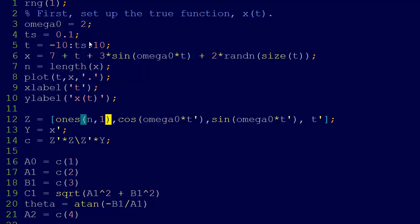So then what we can do is we can fit it. And so this is just what we set up over there. Our basis, right, is ones in the first column. And then cosine omega naught t in the second column. And then sine omega naught t in the third column. And then t in the fourth column. So that's just our z.